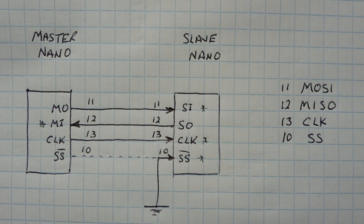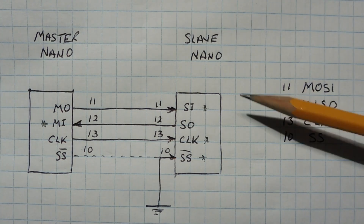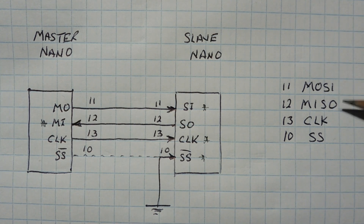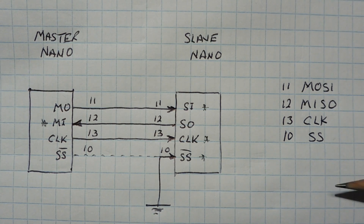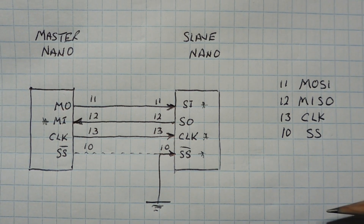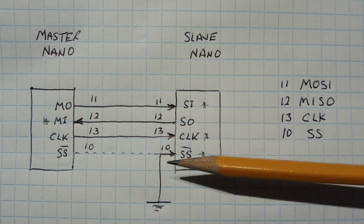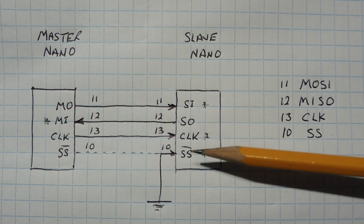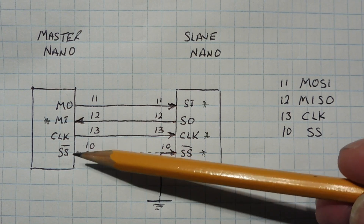Here's the block diagram of my setup. On the left is the master Nano and on the right is the slave Nano. Pin 11 is master out / slave in. Pin 12 is master in / slave out. Pin 13 is clock, and pin 10 is SS — slave select — which is active low. You can hook up pins 11, 12, 13, and 10 together. I opted to ground the slave select on the slave Nano so it's permanently enabled, but you can hook up pin 10 between the two if you want.